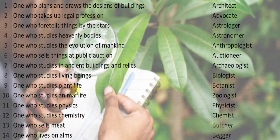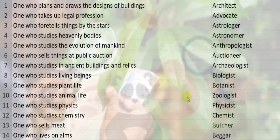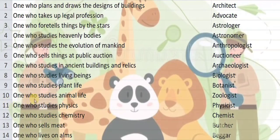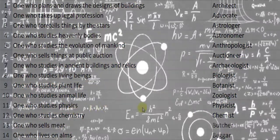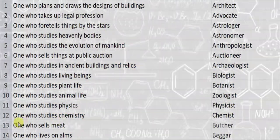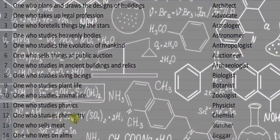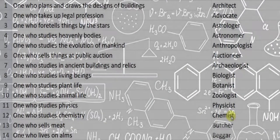One who studies plant life is called a botanist. One who studies animal life is called a zoologist. One who studies physics is a physicist. One who studies chemistry is a chemist.